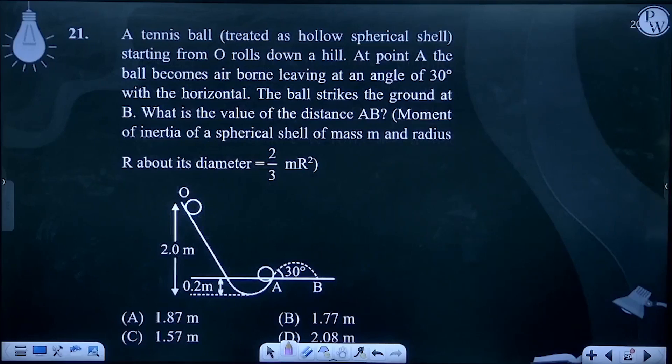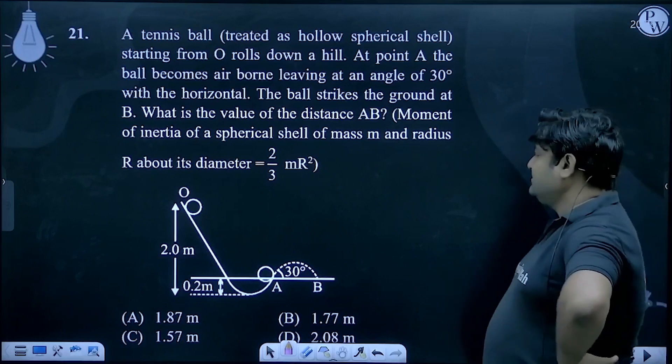Tennis ball treated as hollow spherical shell starting from O, rolls down a hill. At point A, the ball becomes airborne, leaving at angle 30 degrees with the horizontal. The ball strikes the ground at B. What is the value of distance AB? Moment of inertia of spherical shell of mass m radius R about its diameter is 2/3 mR².